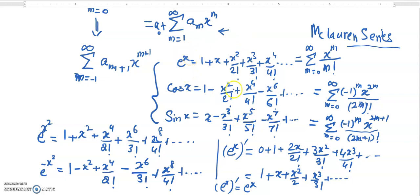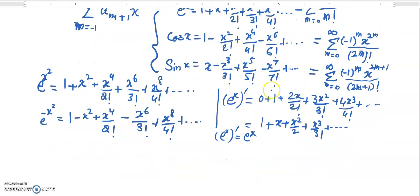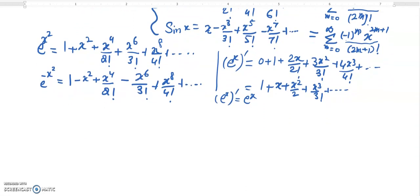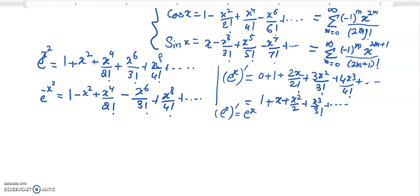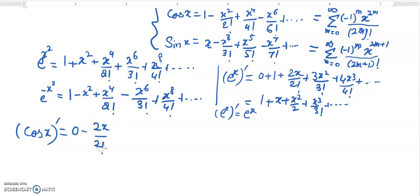Similarly, for cos(x), we can show this property as well. If we take the derivative of the power series of cos(x), the constant term becomes 0, then it will be minus 2x over 2 factorial, plus 4x cubed over 4 factorial, minus 6x^5 over 6 factorial.